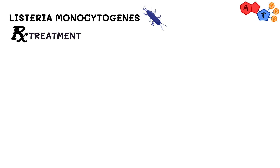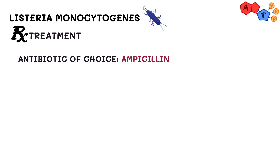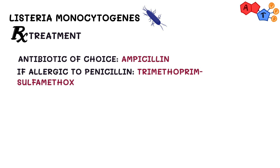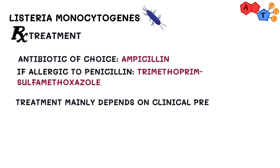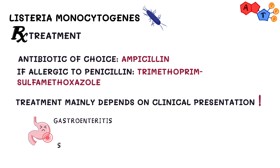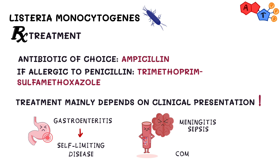Let's discuss the treatment of Listeria. Usually ampicillin is the antibiotic of choice. An alternative treatment is Trimethoprim-Sulfamethoxazole if the patient has penicillin allergy. However, keep in mind that the treatment mainly depends on the clinical presentation and it's not unified among all patients. For example, Listeria gastroenteritis is usually self-limiting and does not require treatment. On the other hand, treatment of invasive disease such as meningitis and sepsis consists of combination therapy.